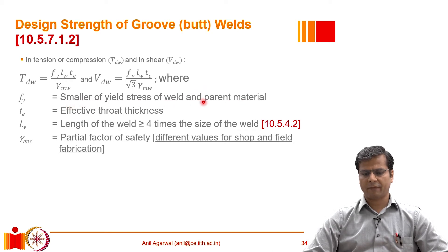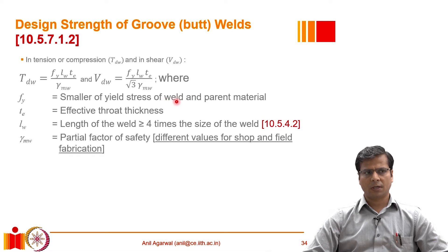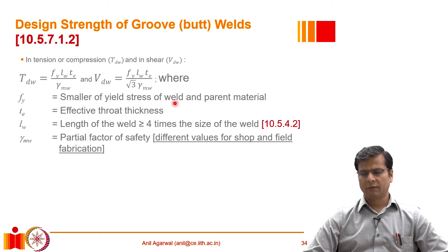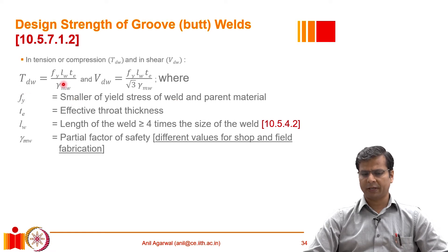So, if we are using Fe 410 steel, it has a yield stress of 250 MPa, and if we are using an EX40 type welding electrode which has a yield stress of approximately 330 MPa, then we would use Fy of 250 MPa.